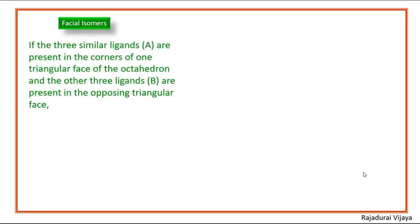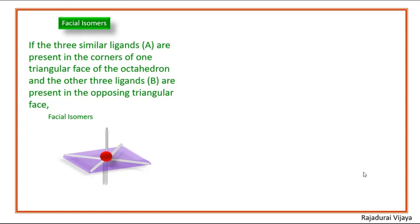The definition of facial isomer: if the three similar ligands are present in the corners of one triangular face of the octahedron, and the other three ligands are present in the opposing triangular face, then the isomer is known as a facial isomer. Here the central metal ion is marked red. The A-type ligands are marked green and arranged at the corners of one triangular face; the other three ligands are marked pink and arranged at corners of the opposite triangular face.